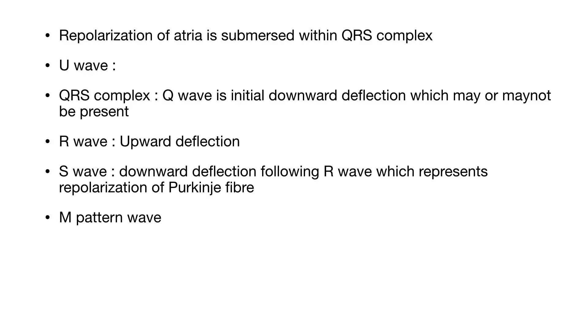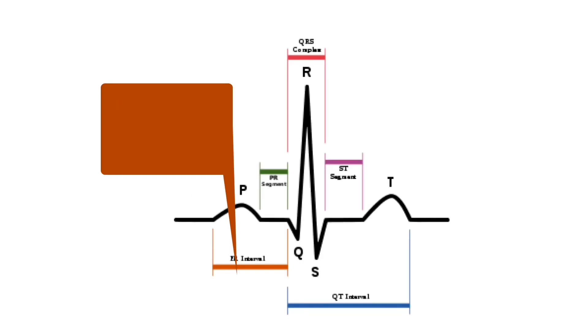Now let us study the various intervals. The time from the beginning of the P-wave to the beginning of QRS complex is termed as PR interval. It represents conduction time from atrium to ventricles.